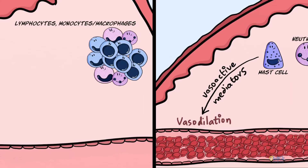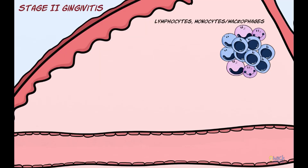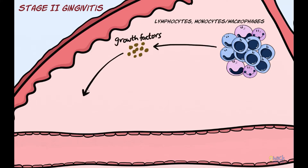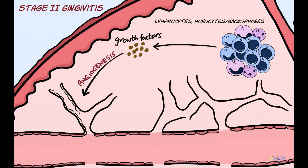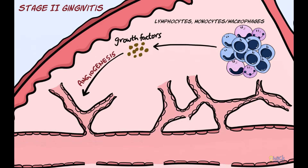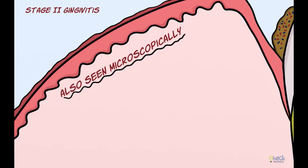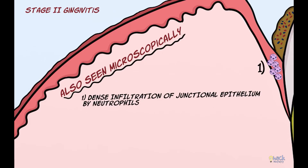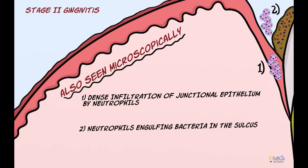Apart from vasodilation of vessels caused by vasoactive substances, lymphocytes and macrophages produce growth factors which help in angiogenesis and further proliferation of capillaries. Also, the junctional epithelium at this stage becomes densely infiltrated with neutrophils, and under the microscope, neutrophils can be seen engulfing bacteria in the sulcular area.